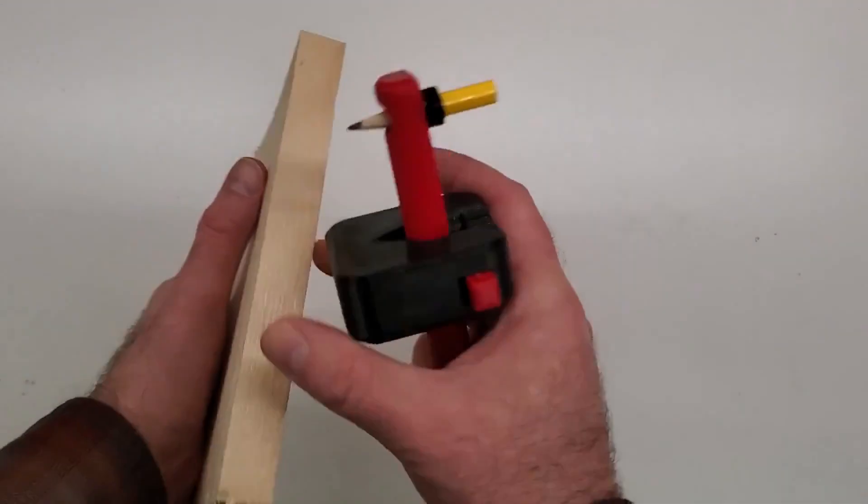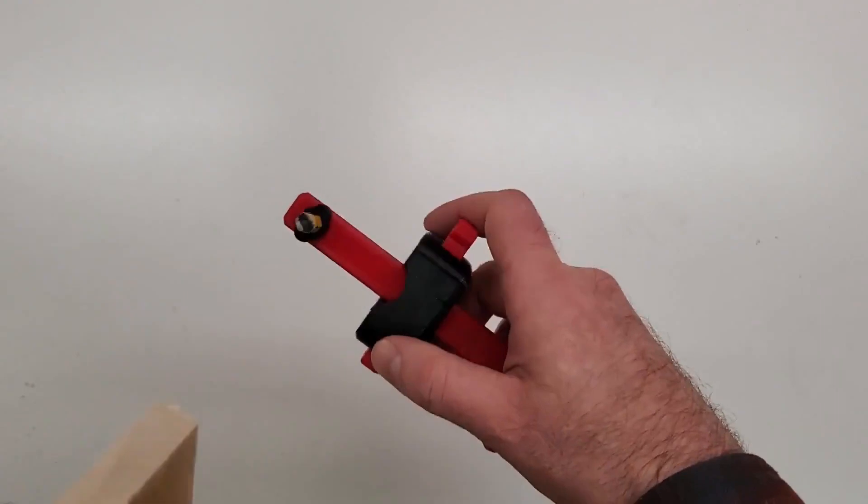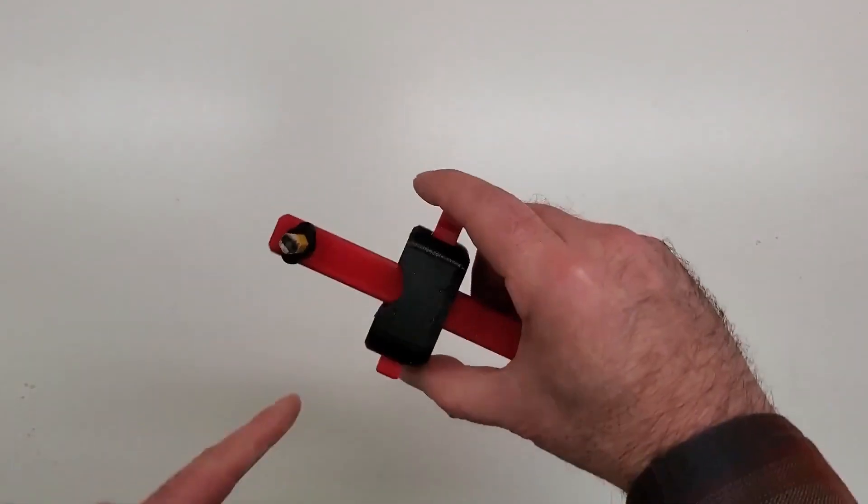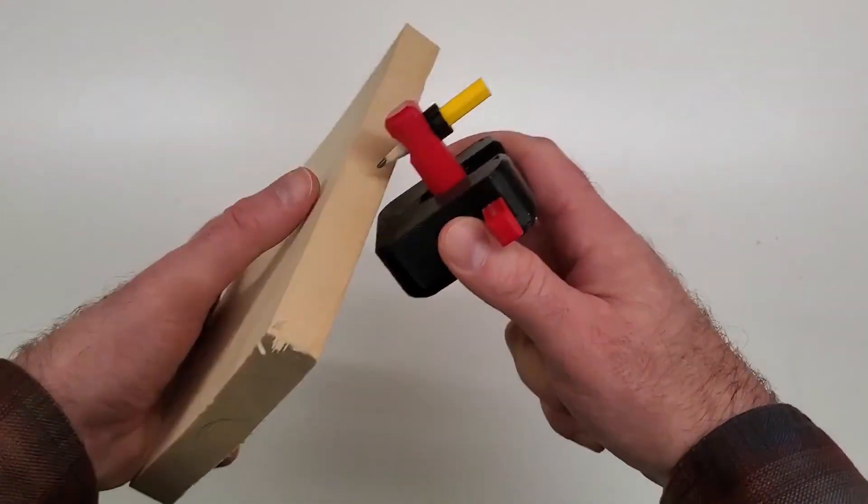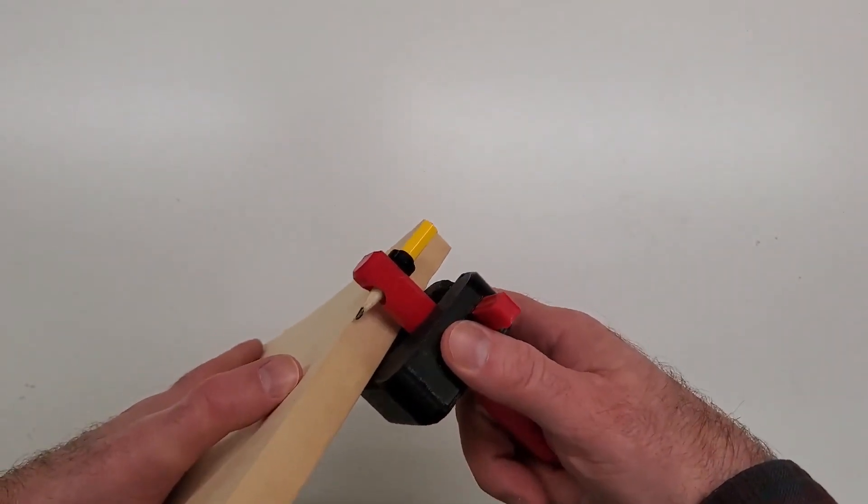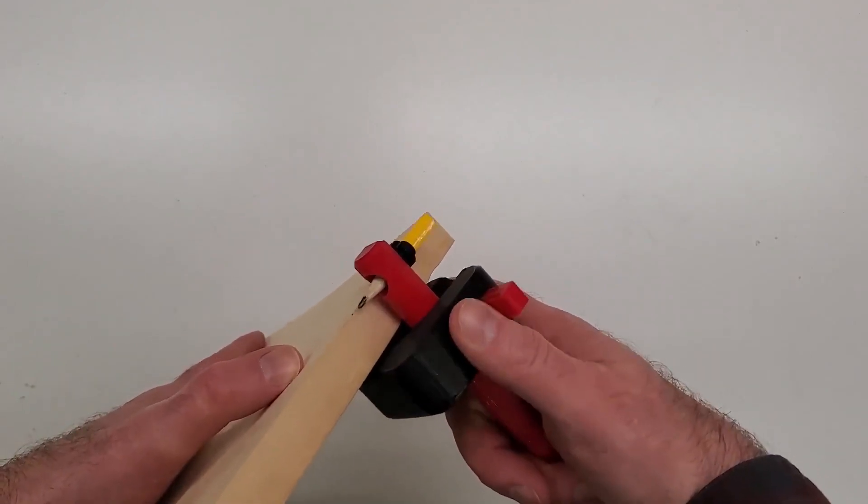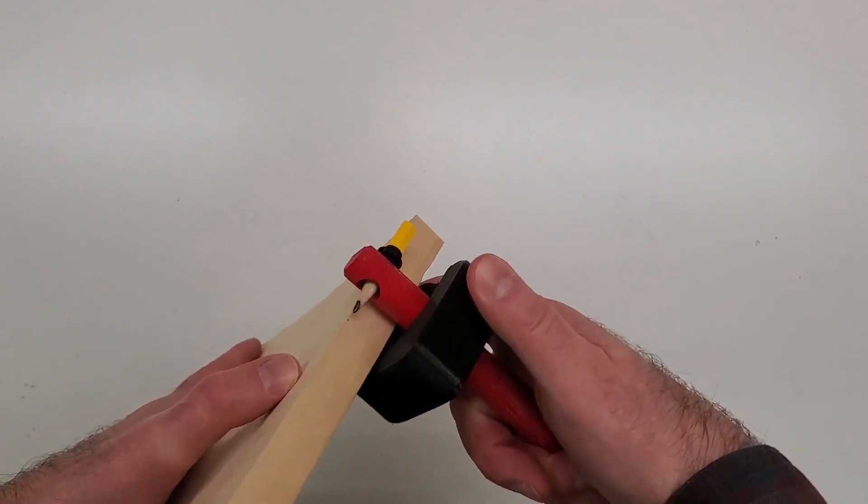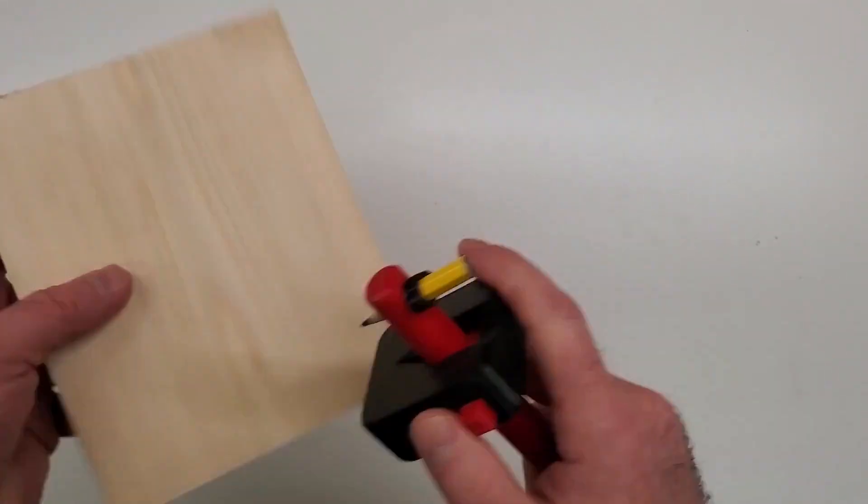So the actual use of the gauge: to release it you press on this side. Now it's loose, you can move it to whatever direction or whatever width you want. And then let's say we were setting it to the width of the board or something like that, you'd set your reference to where you want it, you press on this and now it's locked. The beam won't move.